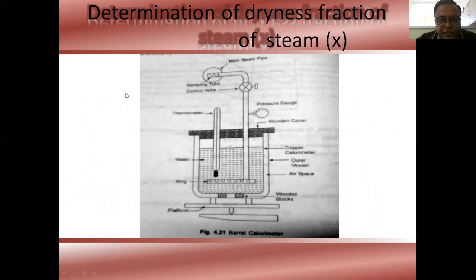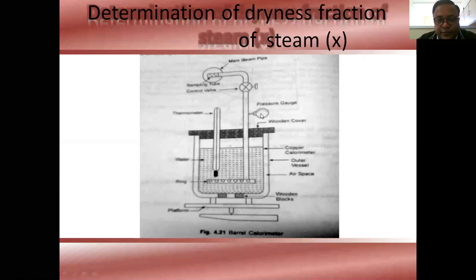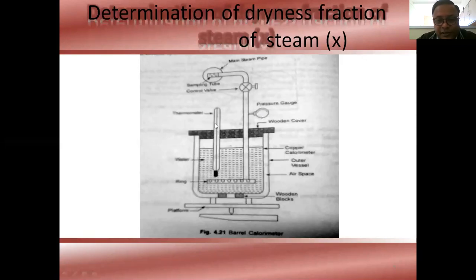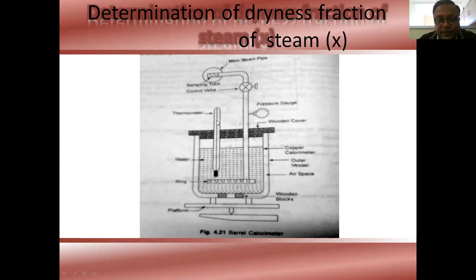This is the arrangement of the barrel calorimeter. Steam flows in through the inlet pipe, passes through the control valve, and enters the calorimeter. A pressure gauge measures the steam pressure, a thermometer measures the temperature, and mixing takes place inside. The temperature after the process can be indicated by the thermometer.